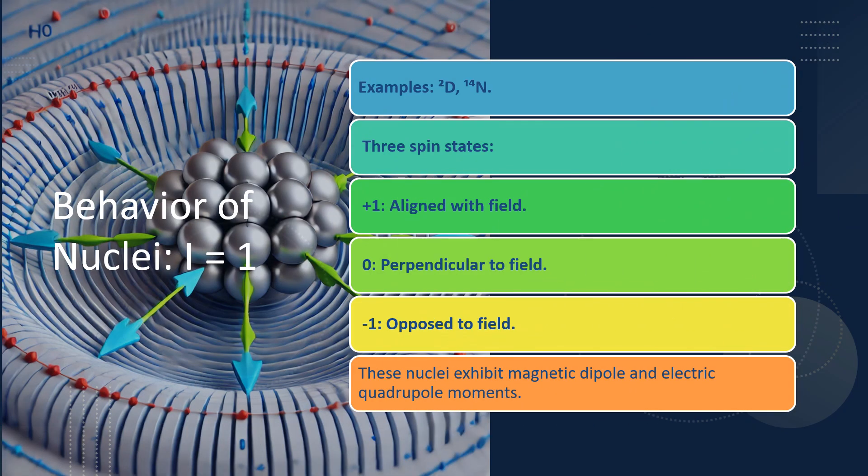Now let's consider nuclei with I = 1, like deuterium. These nuclei have three possible orientations in a magnetic field: one aligned with the field, one against it, and one perpendicular. This complexity allows for more detailed studies of molecular structures, but also requires more advanced techniques to analyze.